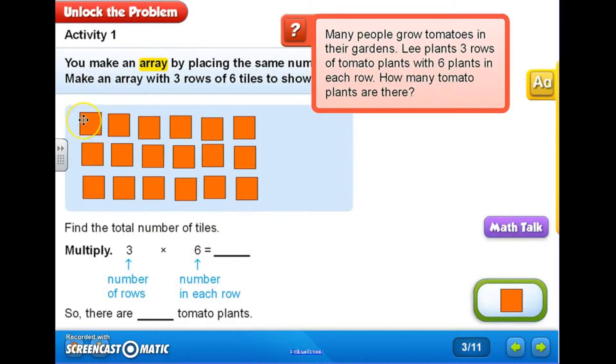Now my goal is to find the product. How can I do this? Well, that's easy. I can either count up the tiles individually one at a time until I get to the total: one, two, three, four, five, six, seven, eight, nine, ten, eleven, twelve, thirteen, fourteen, fifteen, sixteen, seventeen, eighteen.